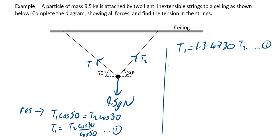Now what we're going to do is resolve vertically. We've resolved horizontally. Only thing left to do is resolve vertically. Resolving vertically, what you're going to get is t1 sin 50 plus t2 sin 30 equals 9.5g. And that is my equation two.